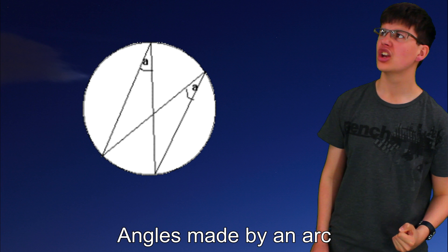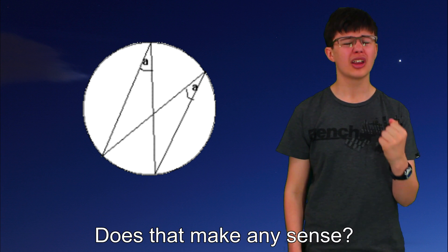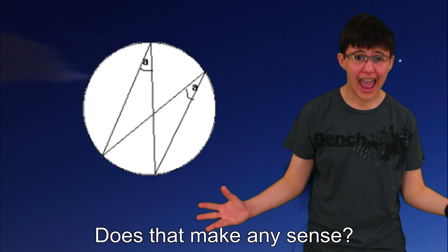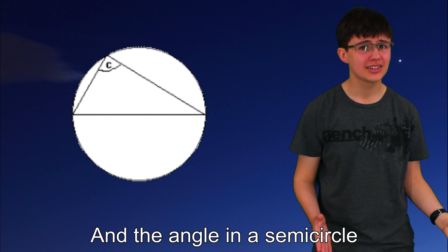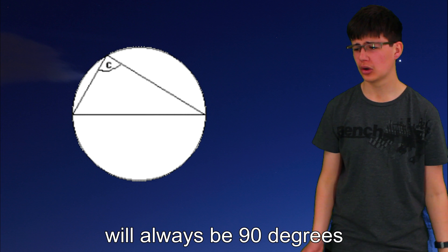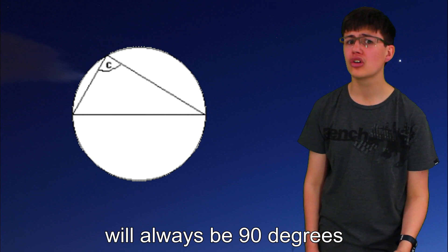Angles made by an arc in the same segment will be equal, does that make any sense? And the angle in a semicircle will always be 90 degrees.